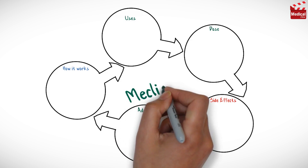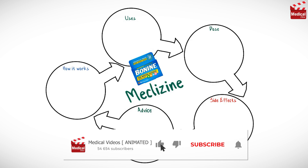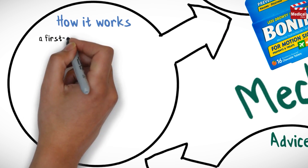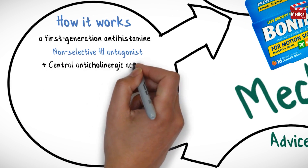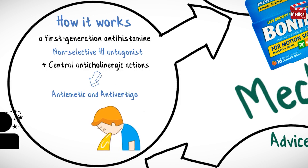In this video we'll briefly discuss what meclizine is and how it works, what it's used for, the dose, side effects, and contraindications and precautions. Meclizine is a first-generation antihistamine, a non-selective H1 antagonist. It also has central anticholinergic actions. The blocking actions on these receptors give meclizine its antiemetic and antivertigo properties.